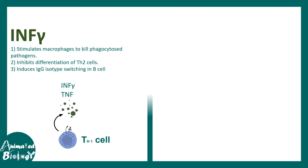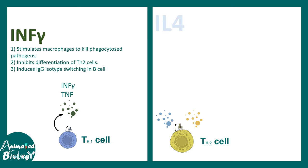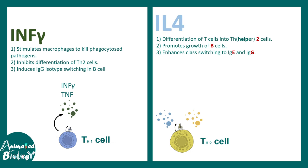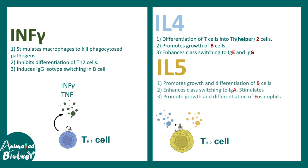There are two important T helper subtypes to remember: TH1 and TH2. Interleukin 4, as the mnemonic helps you remember, plays a central role in TH2 responses.